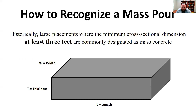No matter how thick it is, if it's over that threshold — even floor slabs that are huge in length and width — when the thickness gets above about two and a half to three feet, you're going to start seeing mass pour effects. So typically, anything that looks like a huge mass of concrete, about three feet for the minimum dimension is a good rule of thumb.